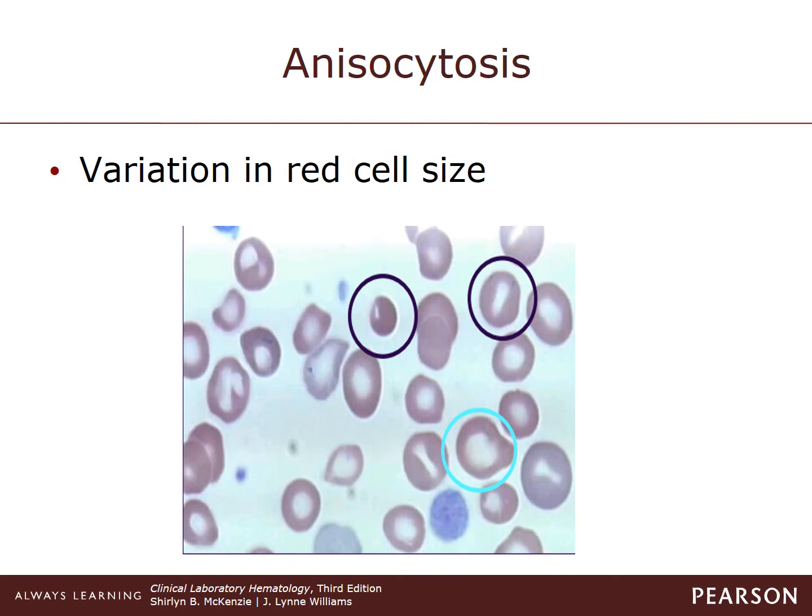Anisocytosis can be detected by examining the blood smear, as well as correlating it with the MCV and the RDW. The MCV will give us the sizes on volume, and the RDW will alert us to there being different sizes present.